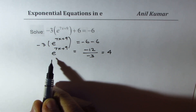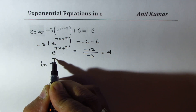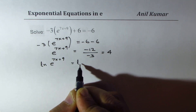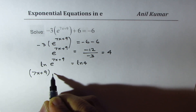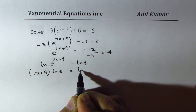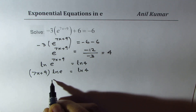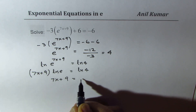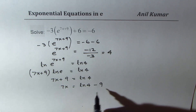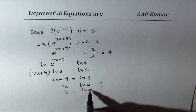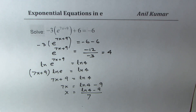Now we take natural log on both sides: ln(e^(7x+9)) equals ln(4). That gives (7x plus 9) times ln(e) equals ln(4). Since ln(e) is 1, we have 7x plus 9 equals ln(4), so 7x equals ln(4) minus 9, and x equals (ln(4) minus 9) divided by 7.